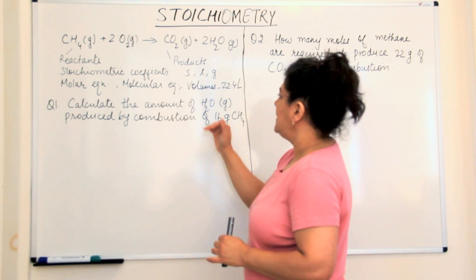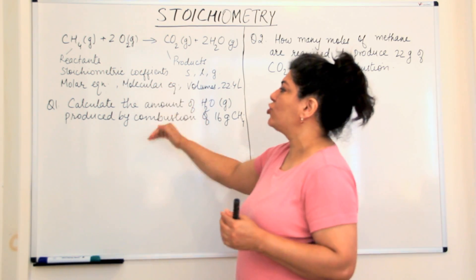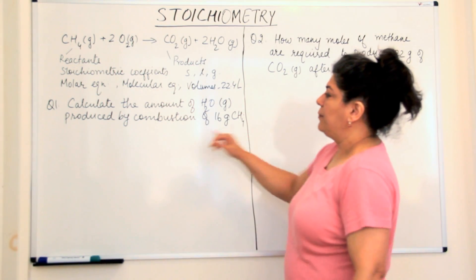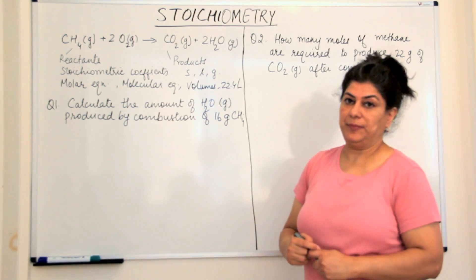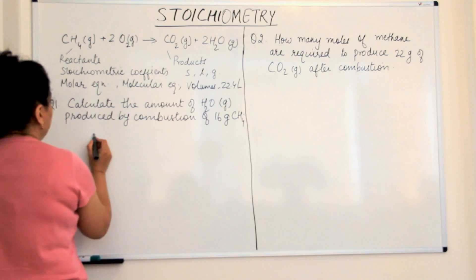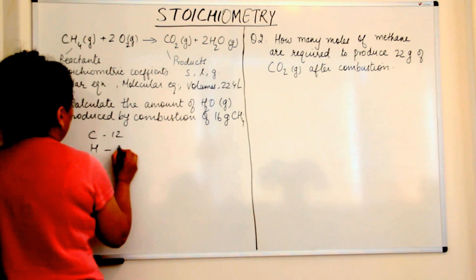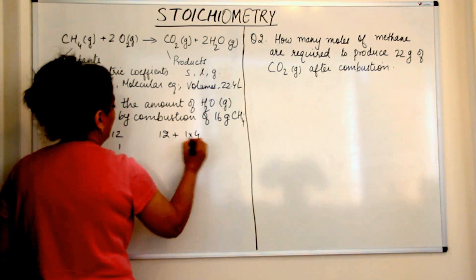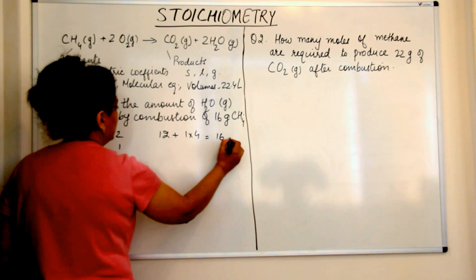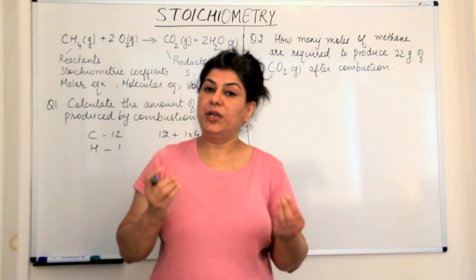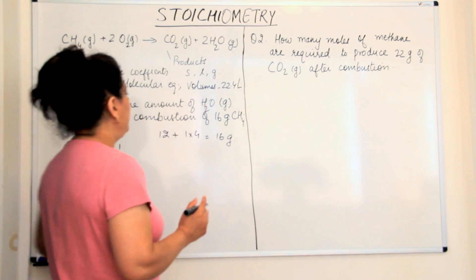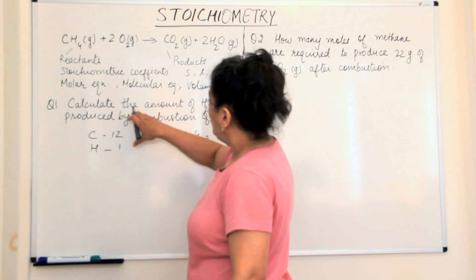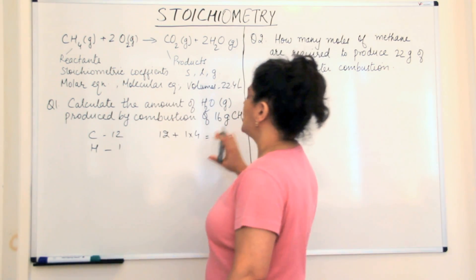Now let us take this problem and solve two questions using stoichiometry. The first question is: calculate the amount of water produced by the combustion of 16 grams of methane. We just calculated the molar mass of methane: carbon has a mass of 12 and hydrogen has a mass of 1, with 4 hydrogens, so the mass of methane is 12 + (1 × 4) = 16. The molecular mass is 16U, and the molar mass for one mole is 16 grams. So we already have 16 grams according to this balanced chemical equation.